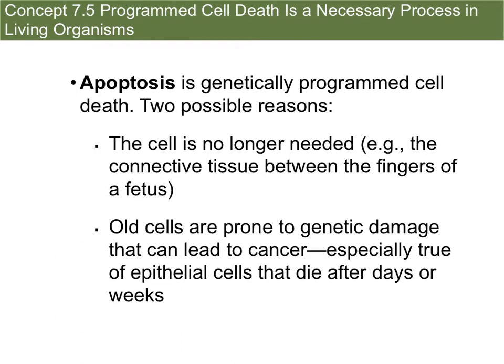As cells go through the cell cycle and then mature, programmed cell death is a necessary process that is going to happen to these older cells. Apoptosis is a genetically programmed cell death, and there are two possible reasons that this would happen.